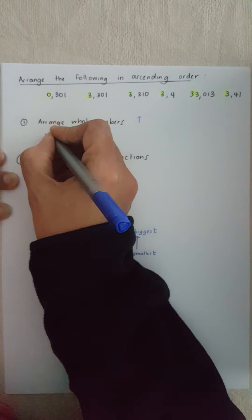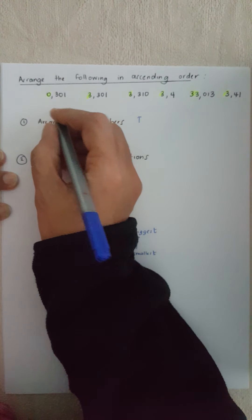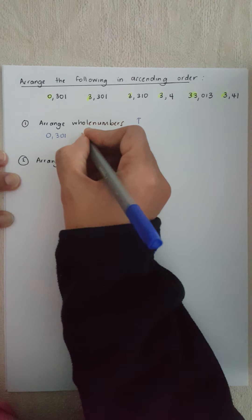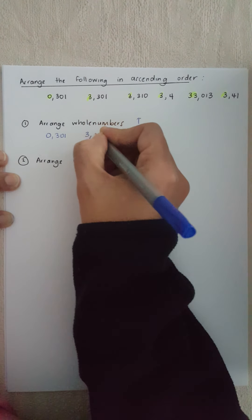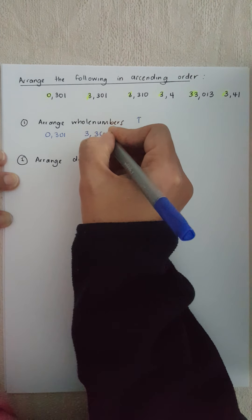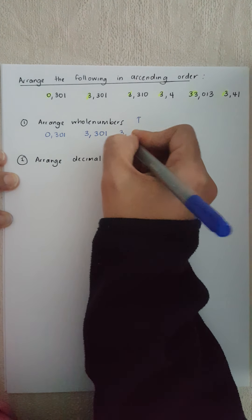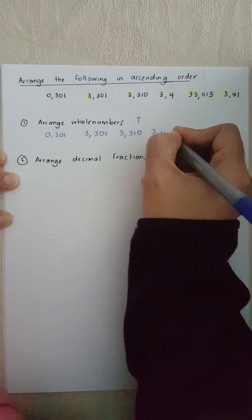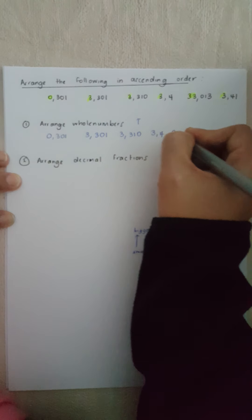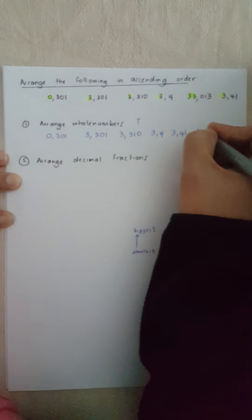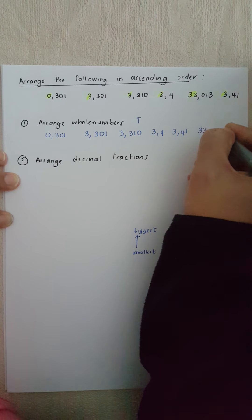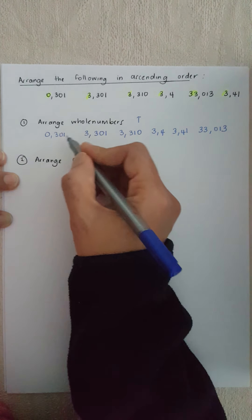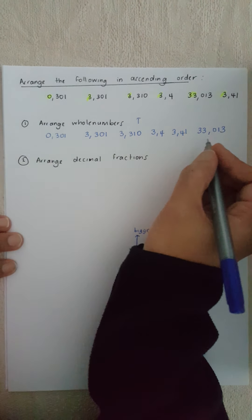My smallest whole number is zero, so 0,301 will be my smallest. Then I have a whole lot of threes, but I'm not worrying about the decimal part of the fraction yet. I write them in any order: 3,301 then 3,310 then 3,4 then 3,41 — and finally 33,013. All I've done is looked at the whole numbers and put them in order from smallest to biggest.